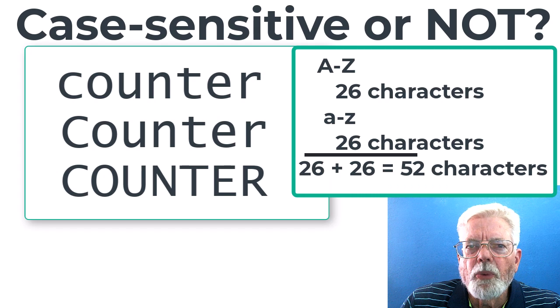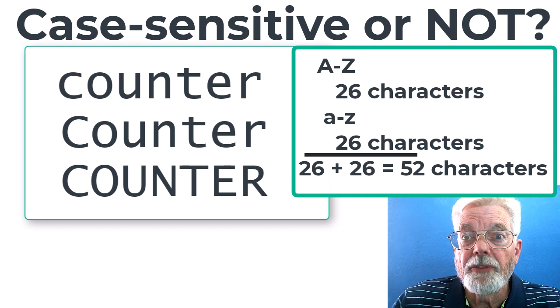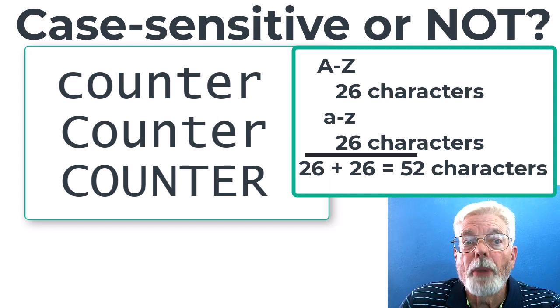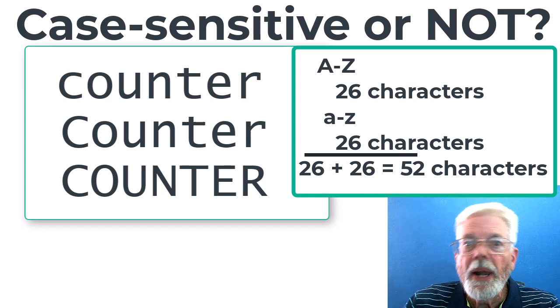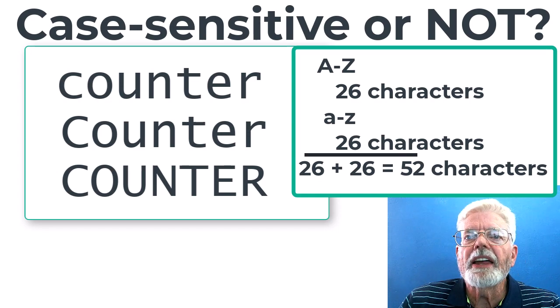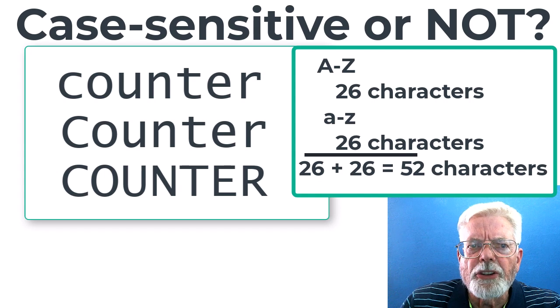When we say a language is case sensitive, that means the capital letters and the small letters are treated as though they have no relation to each other. It is like there are 52 different letters.